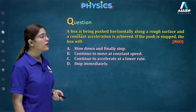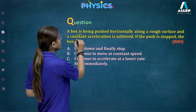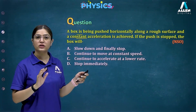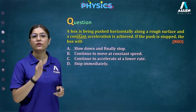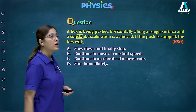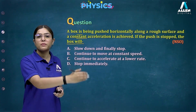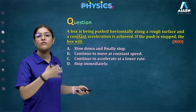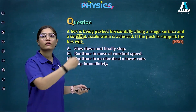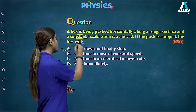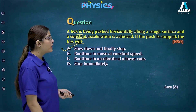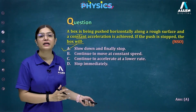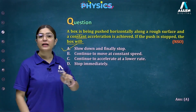Next question: a box is being pushed horizontally along a rough surface with constant acceleration. If the push is stopped, the box will slow down and eventually stop. When no force is applied, the speed decreases as friction decelerates the object until it comes to rest. The correct answer is option A — the box slows down and stops.